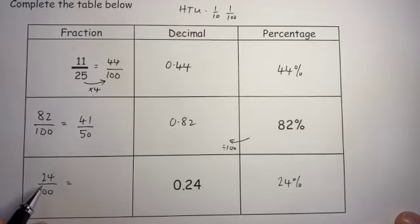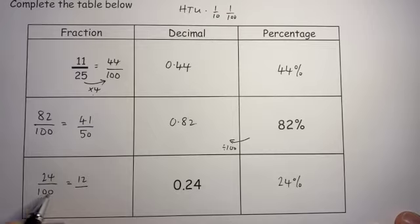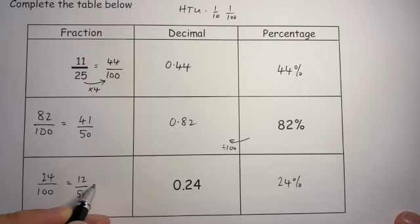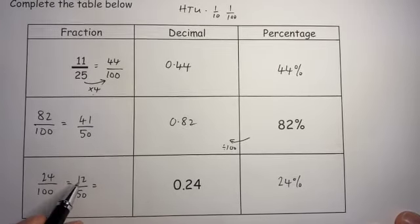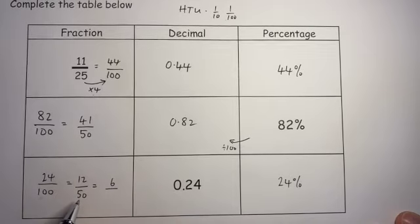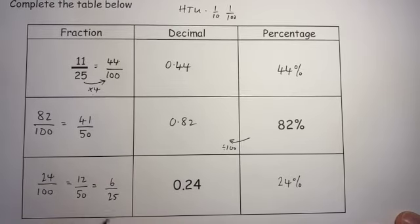Again, number of ways you can do this, but let's go with the same as I did there. I can half that and get 12. I can half that and get 50. However, I can do it again. Half that I get 6. Half that I get 25. So 6 over 25.